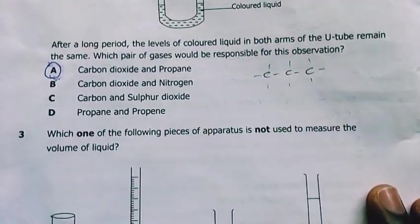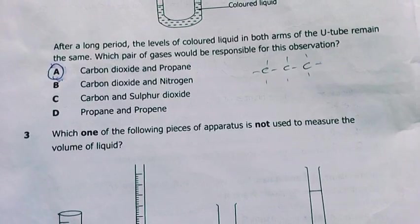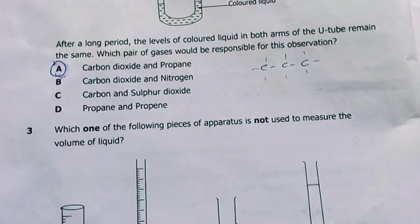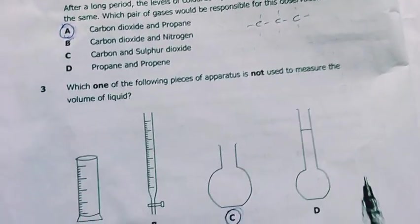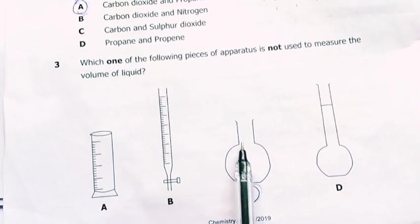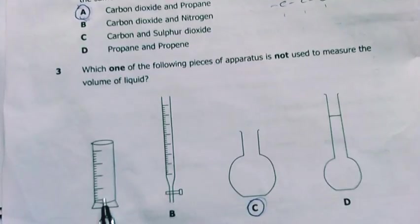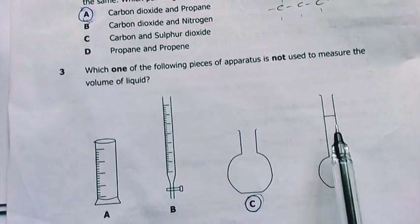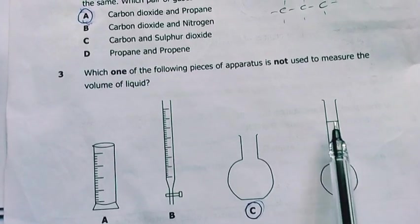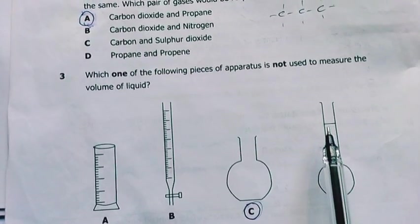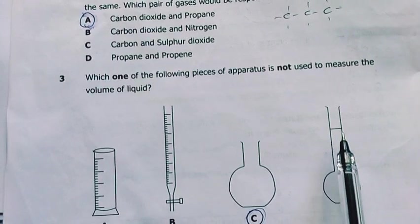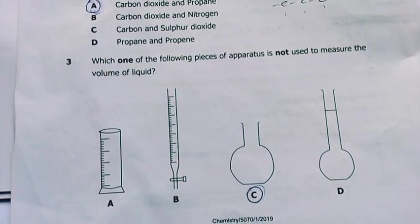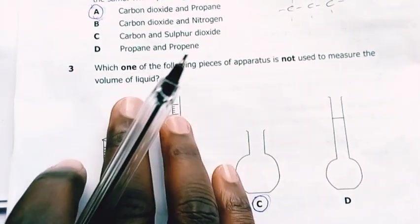Number three, which of the following pieces of apparatus is not used to measure the volume of liquid? My answer would be C because it has no graduation. These have scales here, calibrations. This also has a graduation which can be 1 liter, 500 mL, but this one is open. My answer is C, flat-bottomed flask.